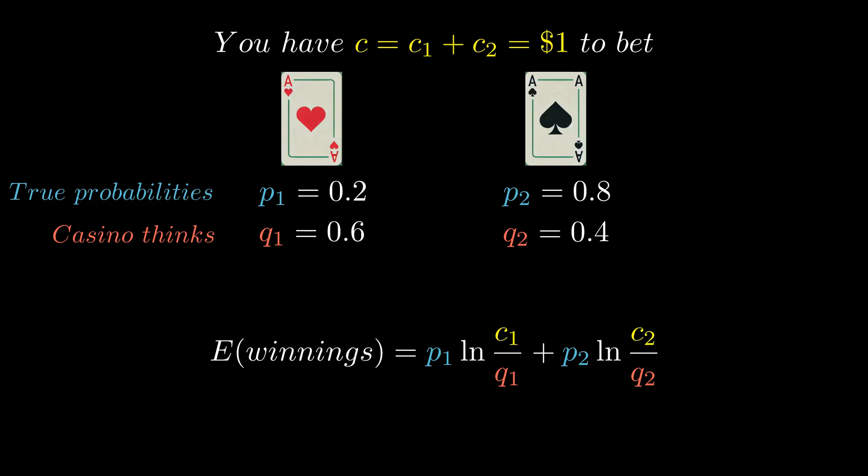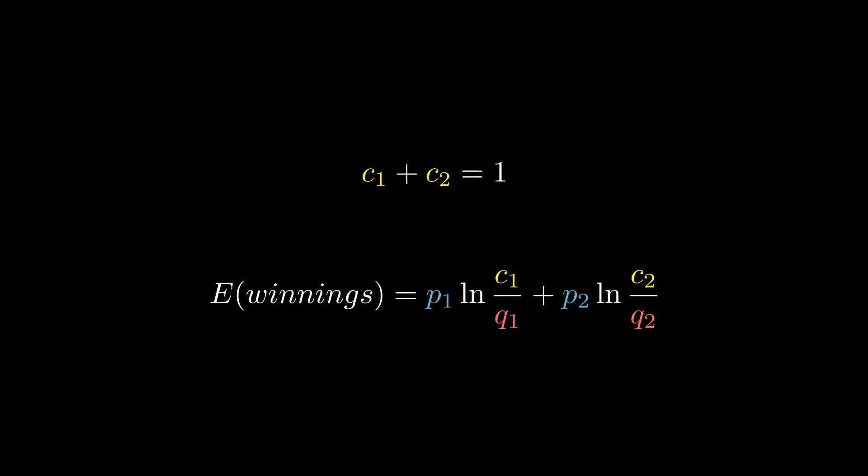Our problem can now be formulated as a question. How much, in expectation, can you profit from the casino, assuming the incorrect probabilities given that you have $1 to bet in total?